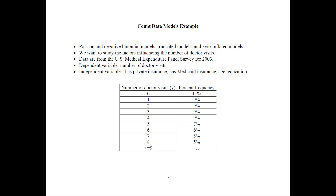We will do the Poisson, the negative binomial model, and hurdle or truncated models, and also zero-inflated models. We would like to study the factors that influence the number of doctor visits. The data comes from the US Medical Expenditure Panel Survey for 2003. The dependent variable is the count of doctor visits, and independent variables include whether the individual has private insurance, Medicaid insurance, their age, and number of years of education.